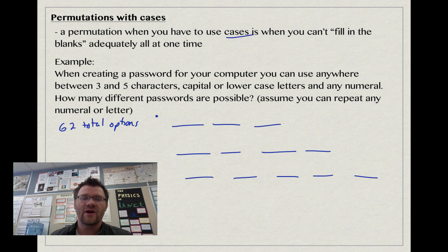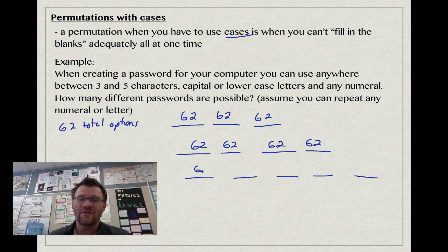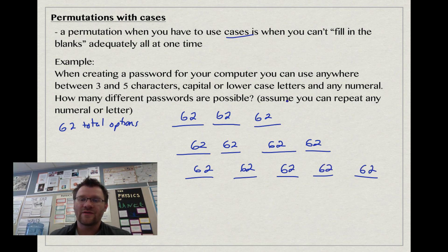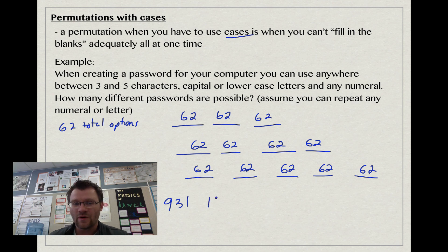We need to figure out each of these separately and then add them all together to find how many different passwords are possible. We have 62, 62, 62 here, then 62, 62, 62, 62 here, and 62 options there. When we do that, 62 cubed, 62 to the fourth power, and 62 to the fifth power, if you find those and add them all up, you get a whopping 931,147,496 different passwords if your password had to be between three and five characters, and you could use capital or lowercase letters and repeat any numeral or letter.